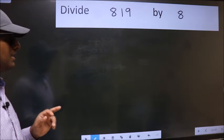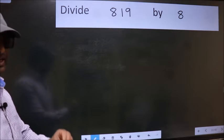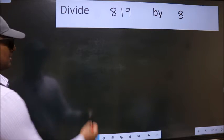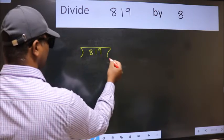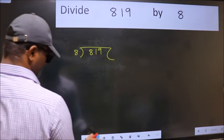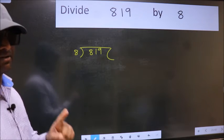Divide 819 by 8. To do this division, we should frame it in this way. 819 here, 8 here. This is your step 1.